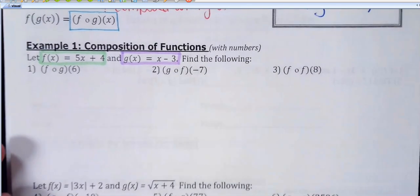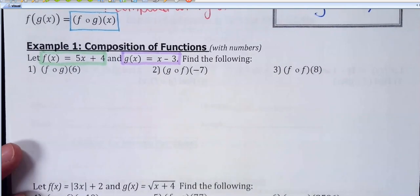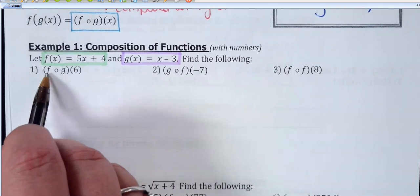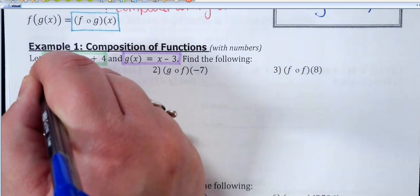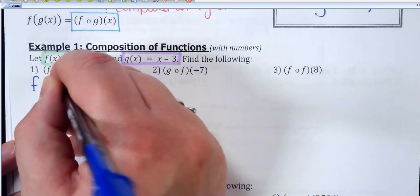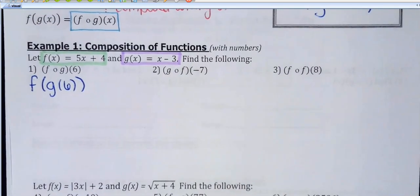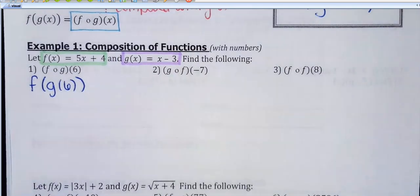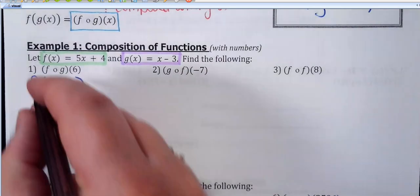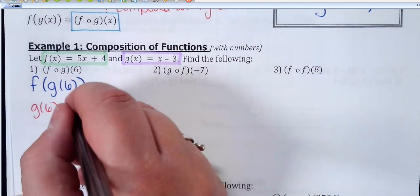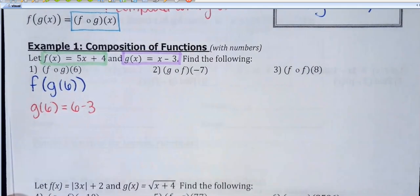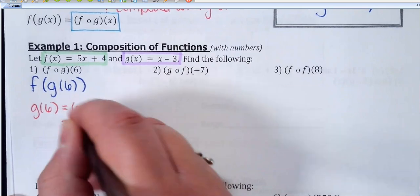I kind of prefer the parentheses notation, so I'm going to rewrite each of these. This says f of g of 6, or f composed with g of 6. The other format would be to write it as f, then parentheses, g of 6. Now, like I just mentioned, this is just two problems in one. Working from the inside out, first figure out what g of 6 is. Using the function rule x minus 3, everywhere you see an x you replace it with 6. So 6 minus 3 is 3.